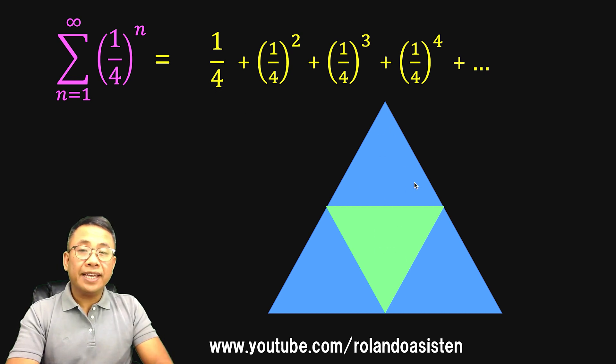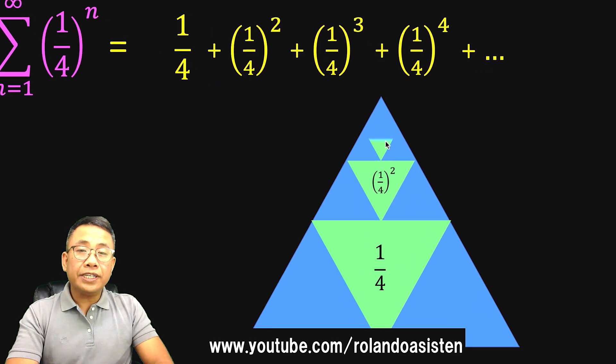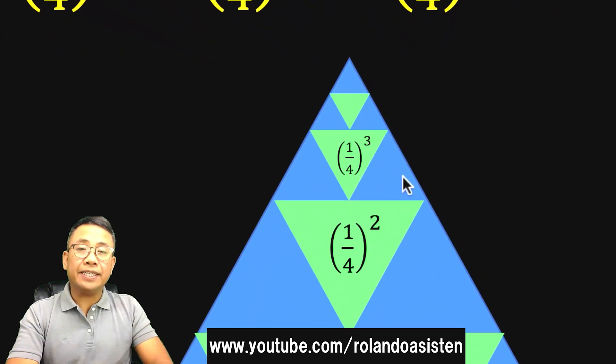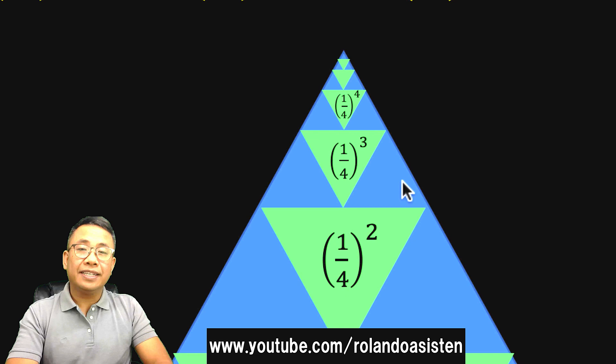Then take this upper 1/4 and get 1/4 of 1/4 in order to get 1/4 squared. Then take again 1/4 of this 1/4 of this 1/4 to get 1/4 to the 3rd and continue the pattern repetitively until infinity.